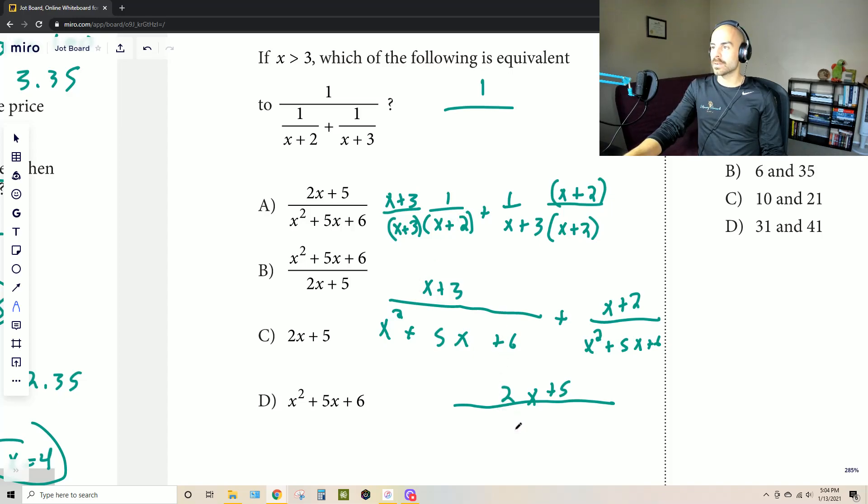And then our denominator is just going to be this one term here. Remember, when you're adding fractions, you just keep one denominator. You have to just make sure they're the same, which now they are. Plus 5x plus 6.